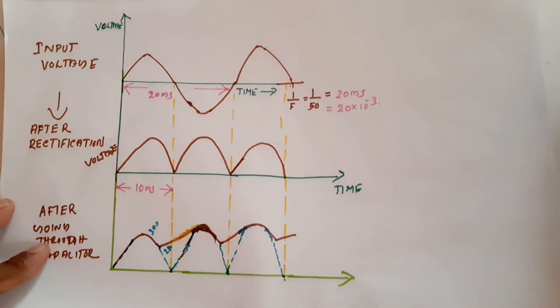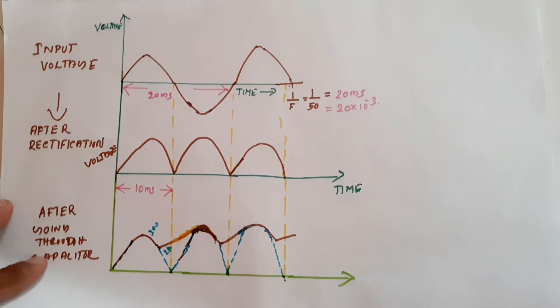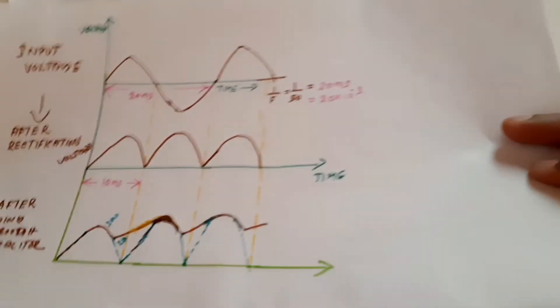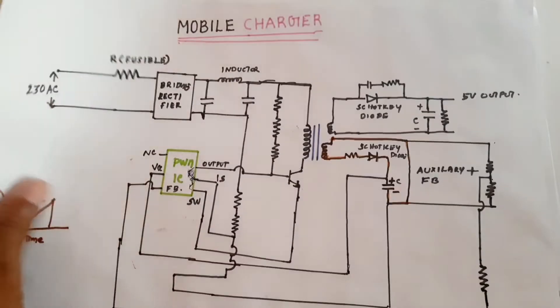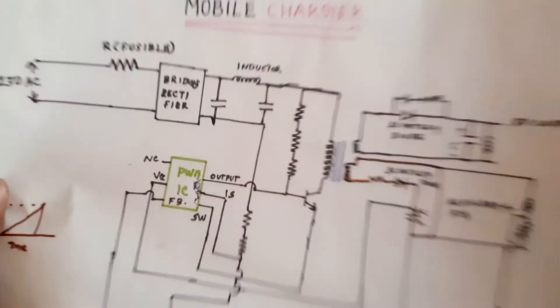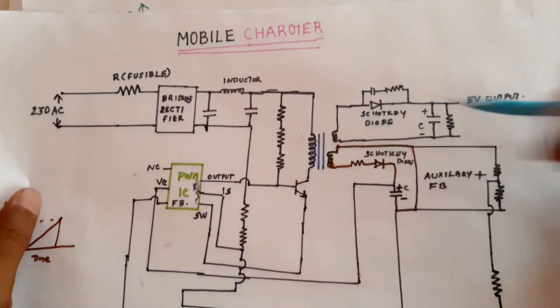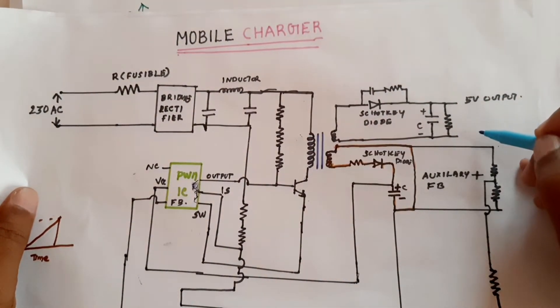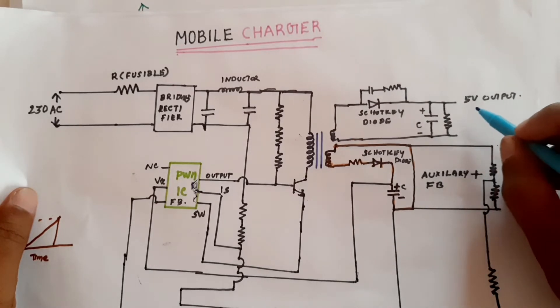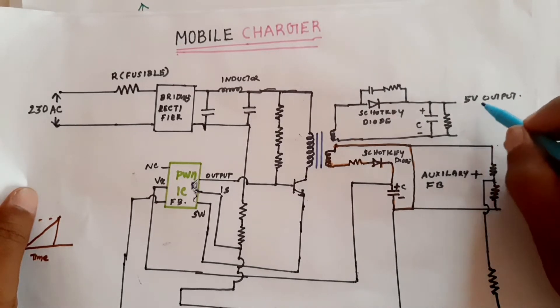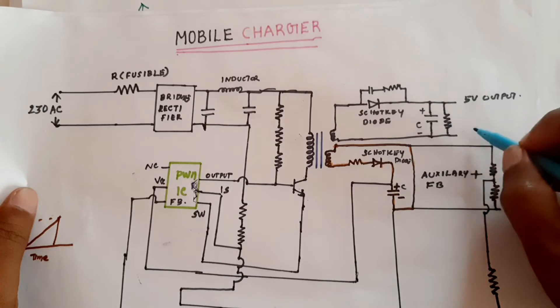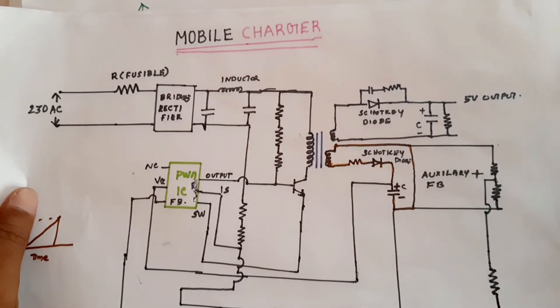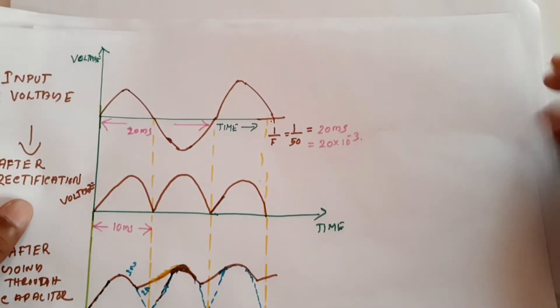Now we will see how to select the value of a capacitor. First, we need to know the desired output power. If we want 5 volts output at 2 amperes of current, we need to determine the required capacitor value.